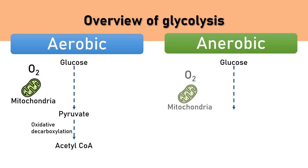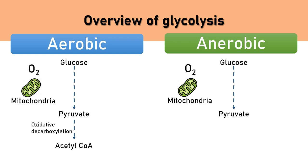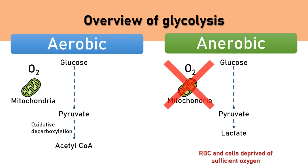Glucose converts into pyruvate when oxygen is present. But what happens in the absence of oxygen? That condition is known as anaerobic. In anaerobic conditions, glucose converts to pyruvate and pyruvate then converts into lactate. This happens inside RBCs, as RBCs do not contain mitochondria — they are totally dependent on ATP generated by anaerobic glycolysis. Muscles or cells deprived of oxygen also convert glucose to lactate. Lactate is transported through the blood to the liver, where it converts back into glucose through the Cori cycle.